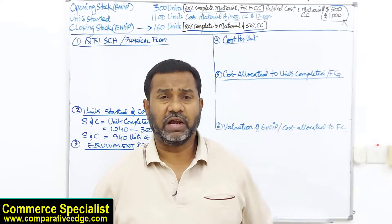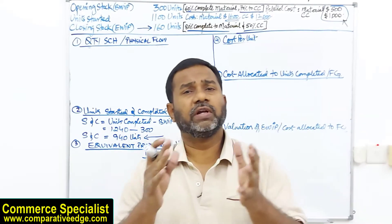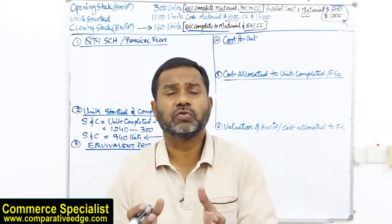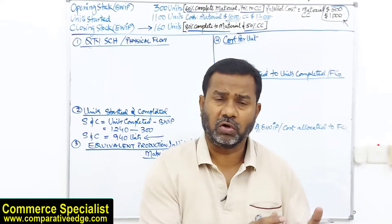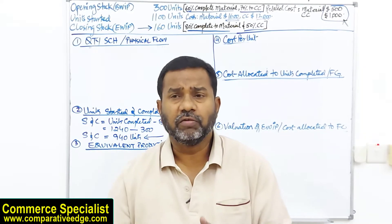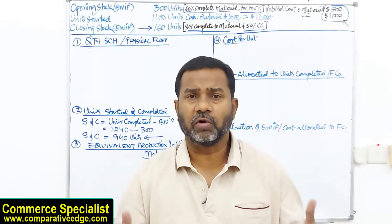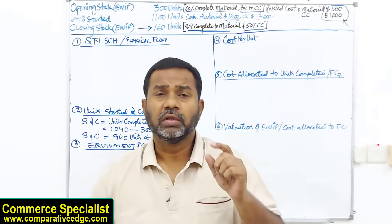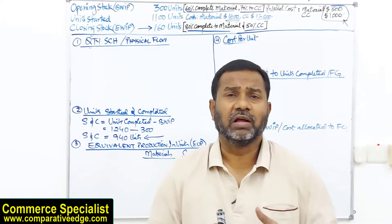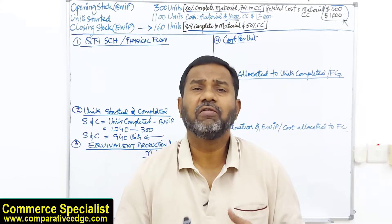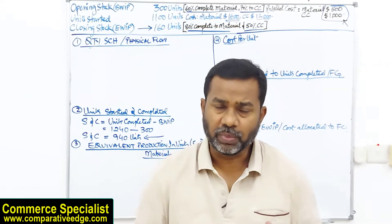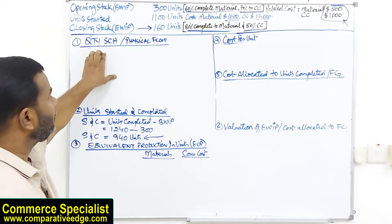Whether it be the first-in-first-out method or the weighted average method, our focus is to calculate cost per unit, the cost allocated to finished goods, and the valuation of ending work in progress. The very first step — although not always required in MCQ or short-answer questions — is advisable because it makes everything much easier. We always start with the quantity schedule, also called the physical flow of goods.